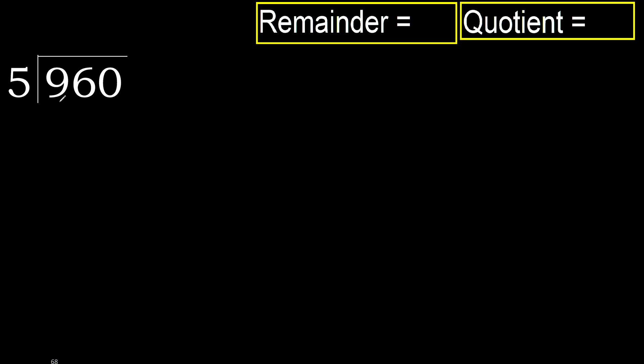960 divided by 5. 9 is not less, therefore work with 9. 5 multiplied by which number is nearest to 9, but not greater? 5 multiplied by 2 is 10, which is greater. 5 multiplied by 1 is 5, which is not greater. OK. Subtract: 9 minus 5 is 4.